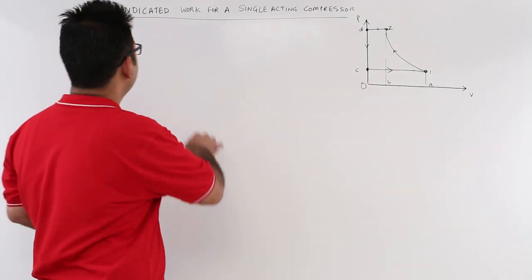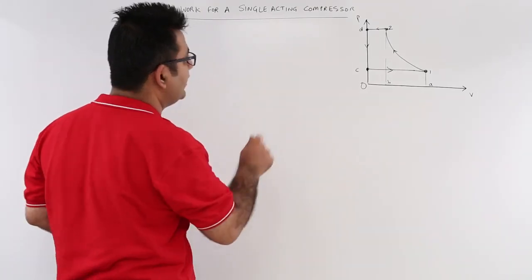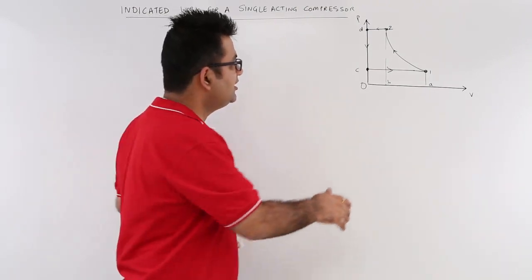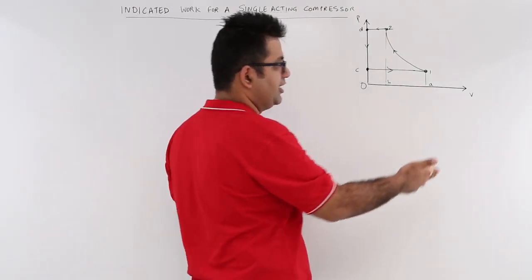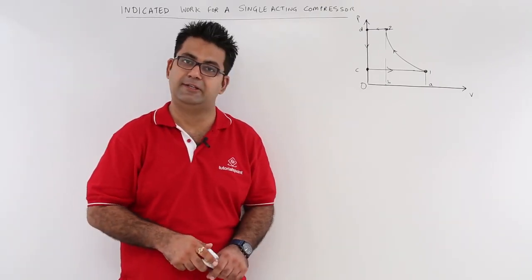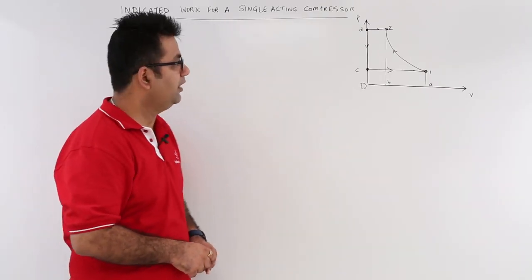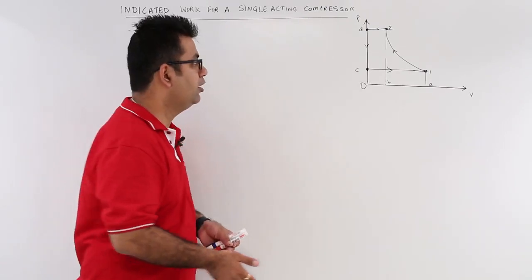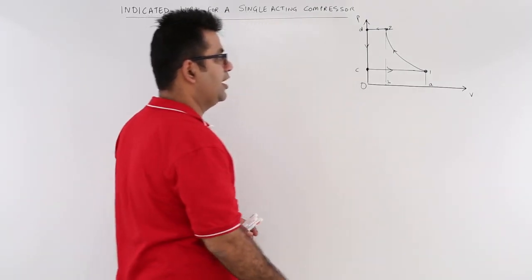Now let's look at the expression for indicated work for a single acting compressor. So this is the PV plot we did when we were discussing the construction of a single acting reciprocating air compressor.